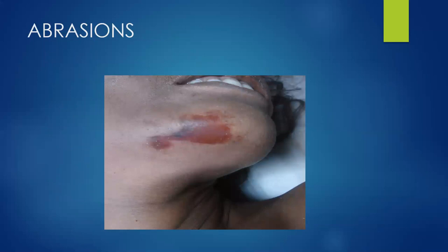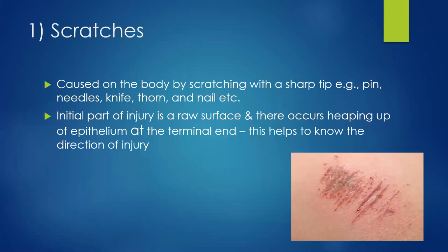Scratches are the commonest type of abrasion, caused by sharp-tipped objects such as pins, needles, knives, thorns, or nails. The initial part of the injury is a raw surface, with heaping of epithelium at the terminal end. By examining this heaping, we can determine the direction of the injury.